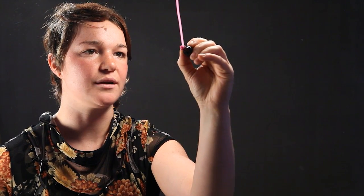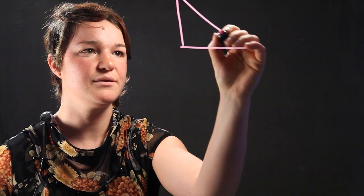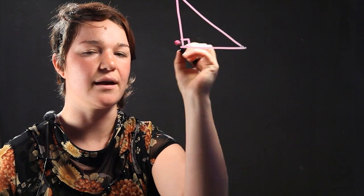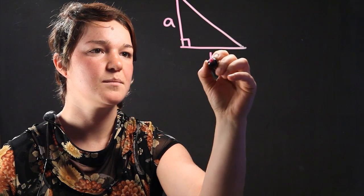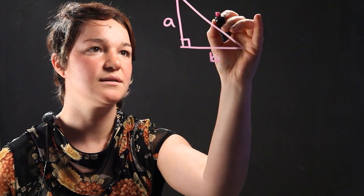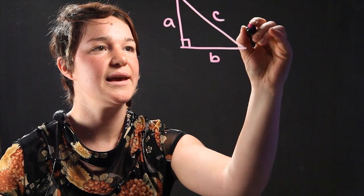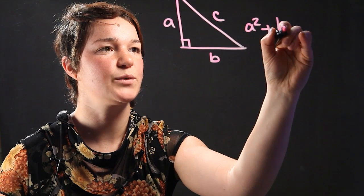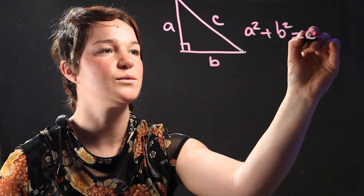So first, let's remind ourselves about the Pythagorean Theorem. What it says is that you must have a right triangle, and if you have a right triangle, here's a right angle, and we call these sides A, B, and the hypotenuse is C, then A squared plus B squared has to equal C squared.